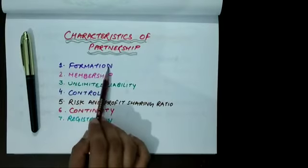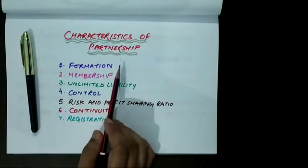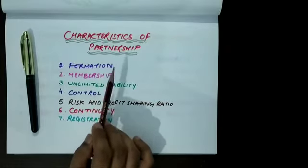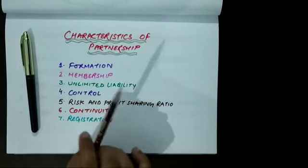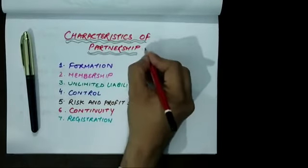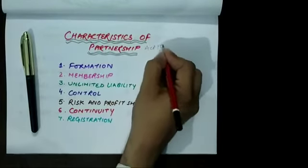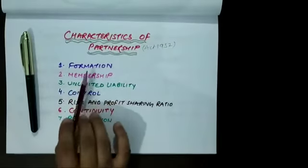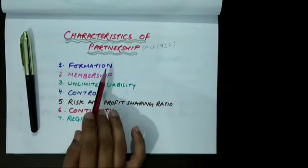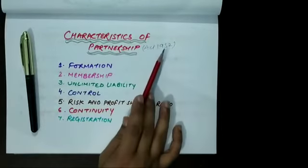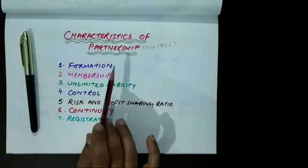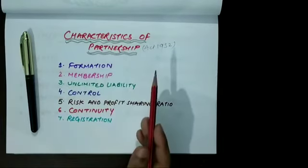The very first is formation, means how is a partnership business formed. The partnership is governed under the Indian Partnership Act 1932. I have told you Partnership Act came in 1932. Partnership is formed by an agreement between two or more people.